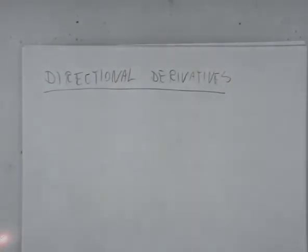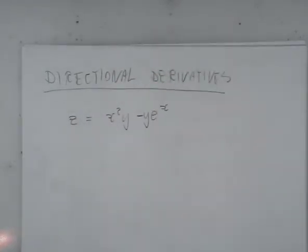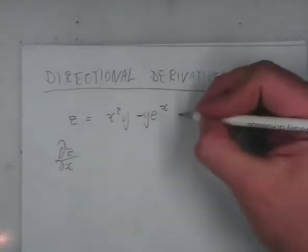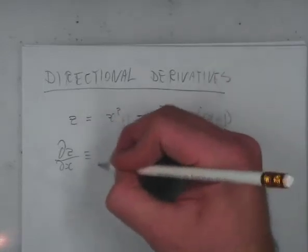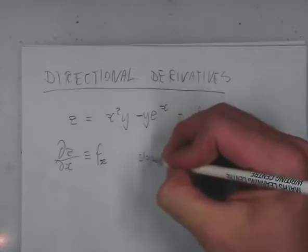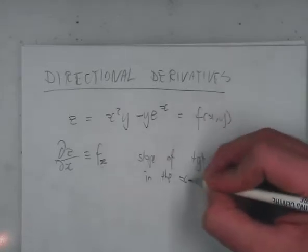For directional derivatives, if you've got a function like x squared y minus y e to the x, when you talk about dz on dx — or equivalently fx — they both represent the same thing, just different notations. They mean the slope of the tangent plane when sliced parallel to the x-axis. So this is the slope of the tangent plane in the x-axis direction.